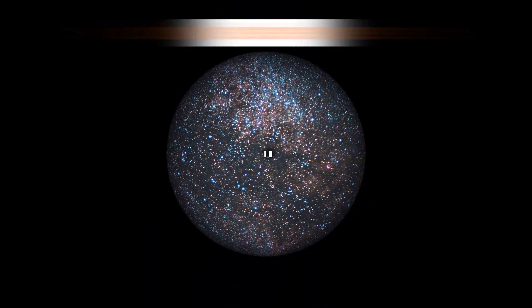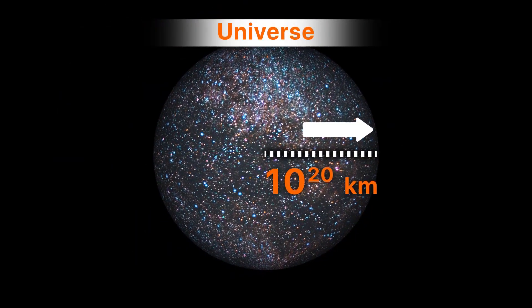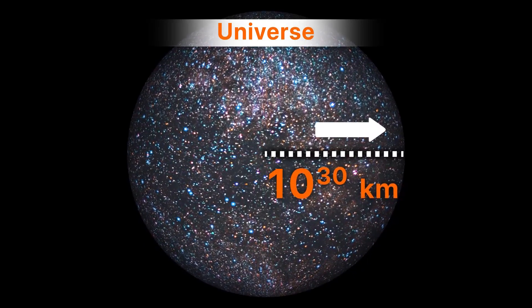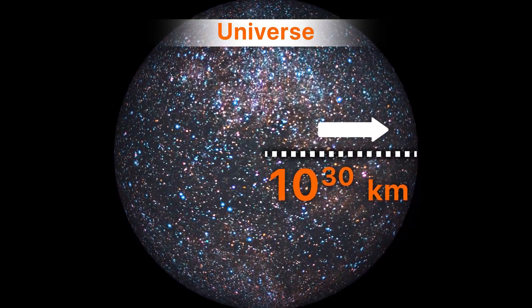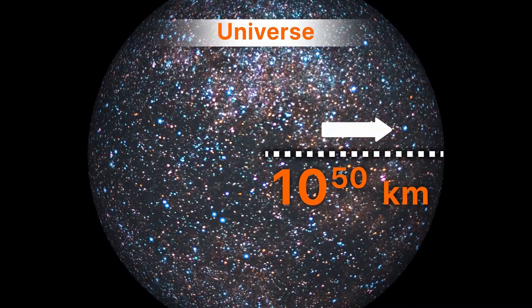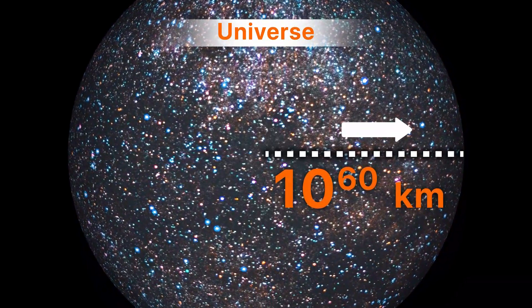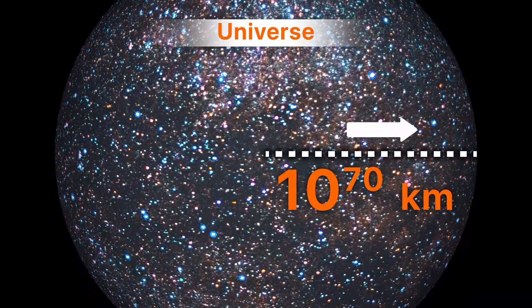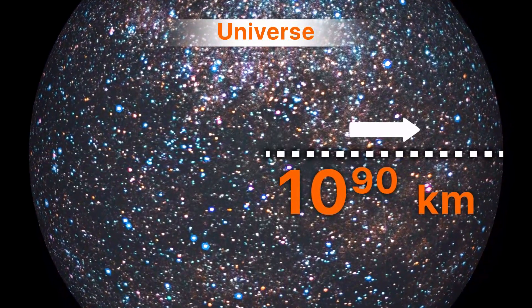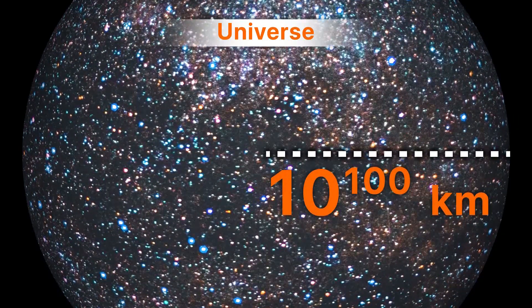If we consider the mathematical model, at least 10 to the power of 20 to 10 to the power of 30 km can be considered for the radius of the universe, which over time, according to the expansion, can go up to 10 to the power of 100 km.